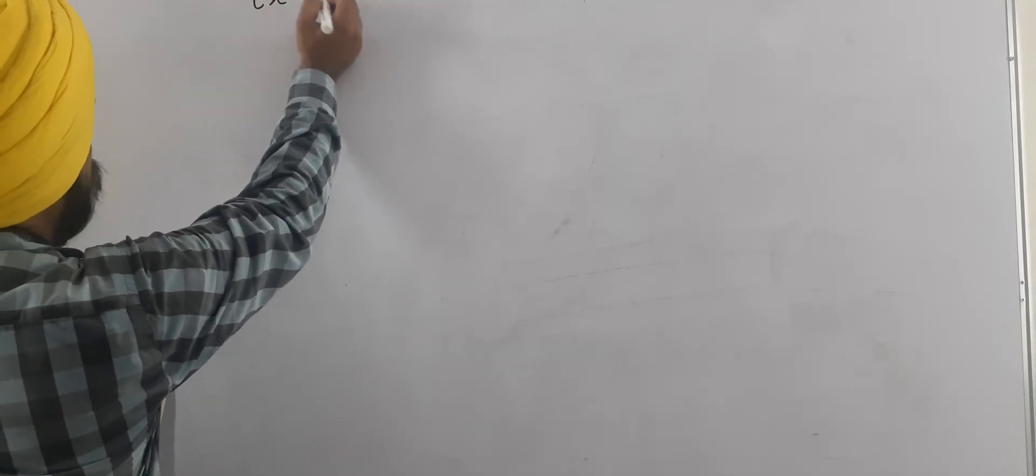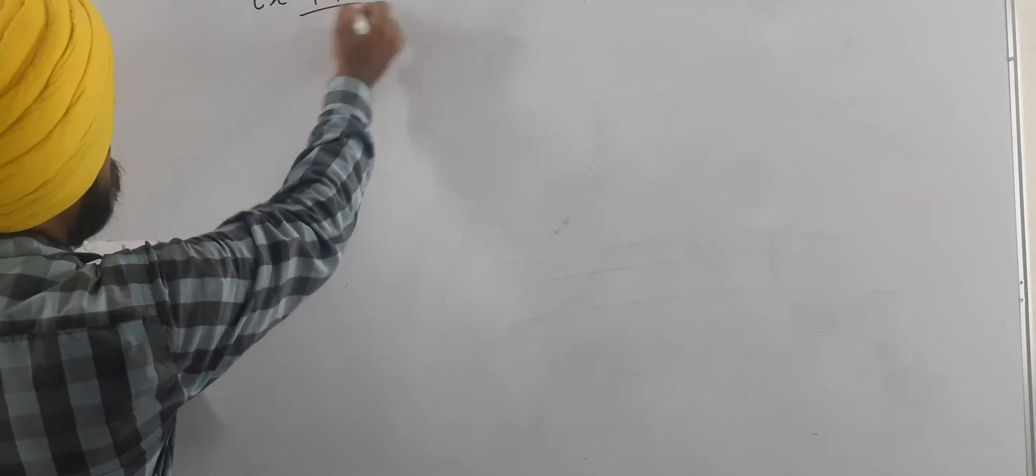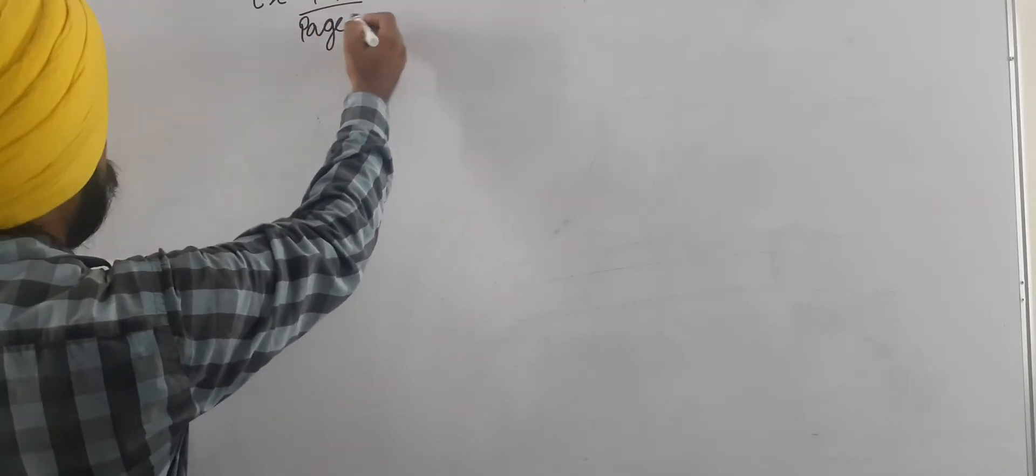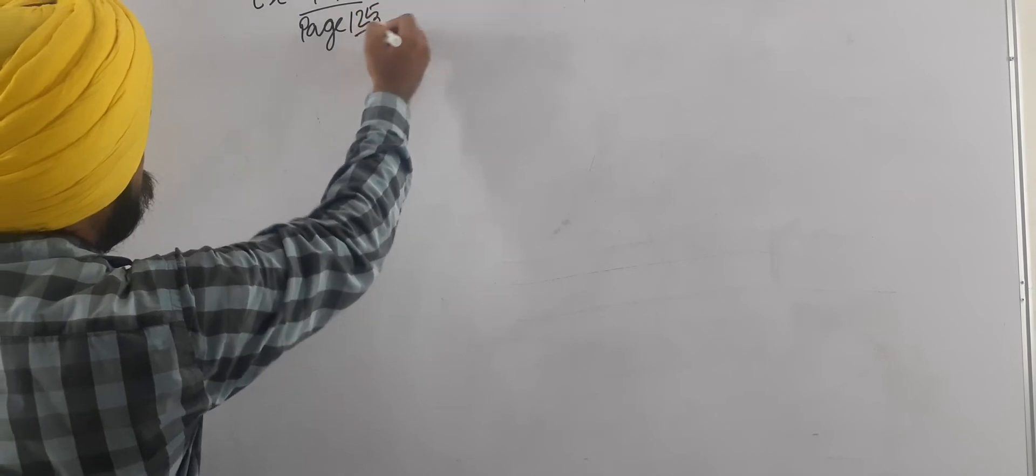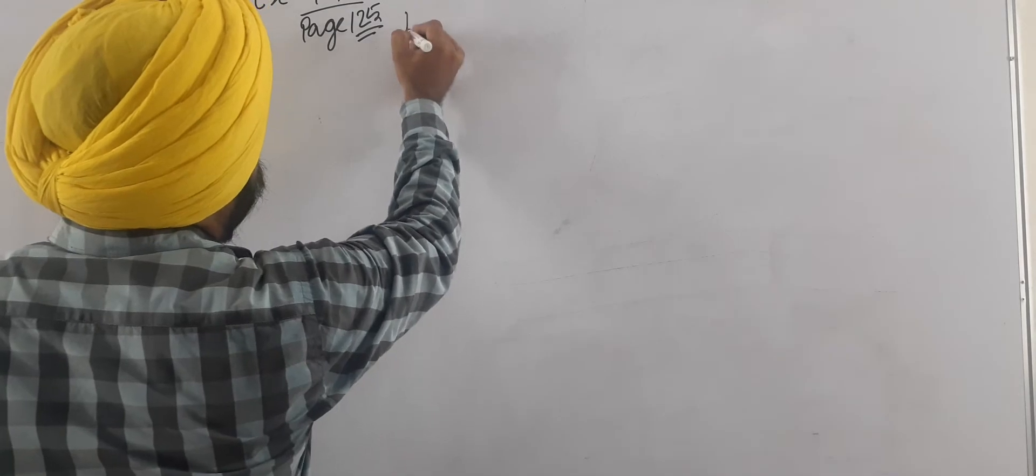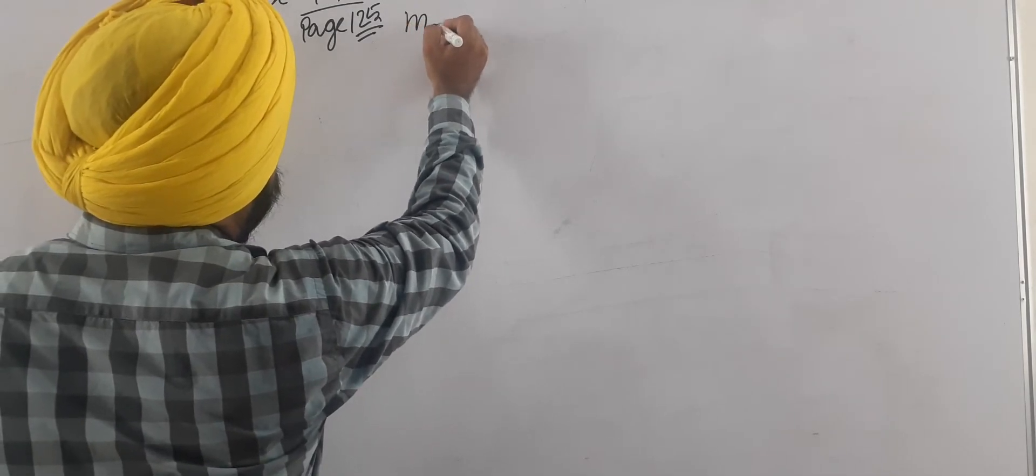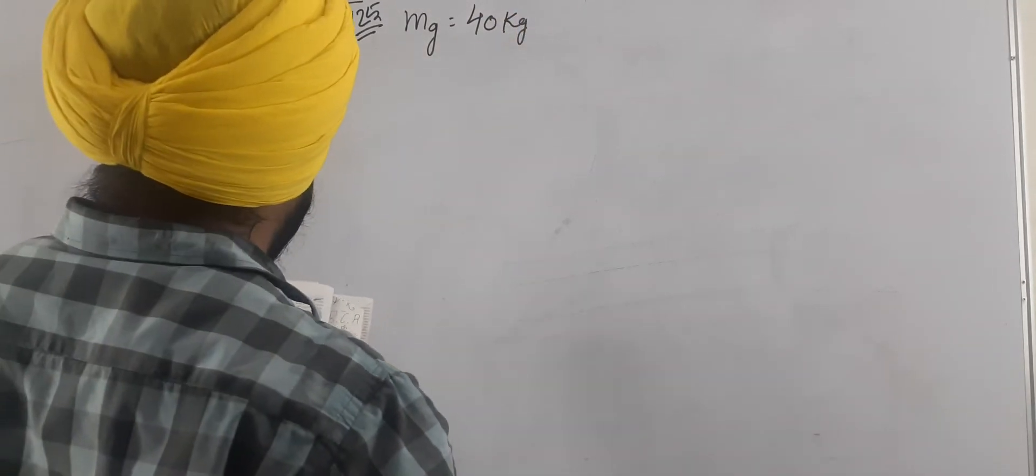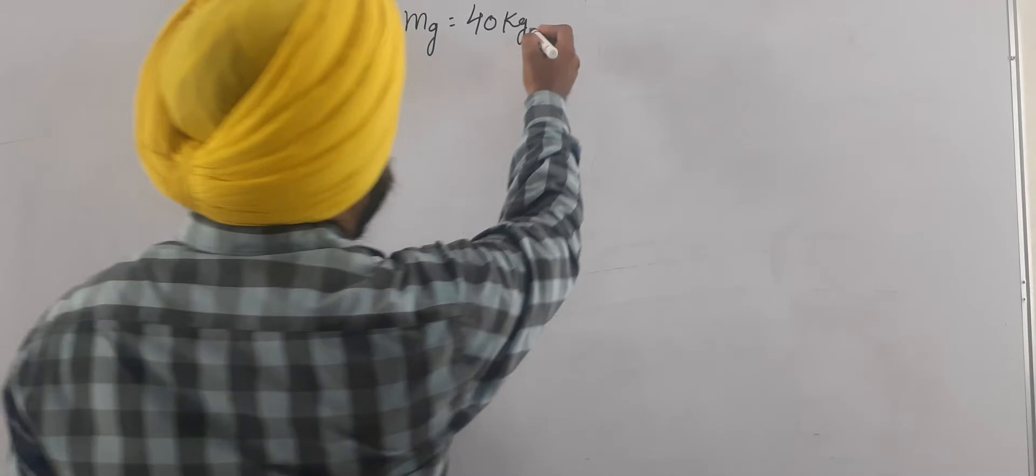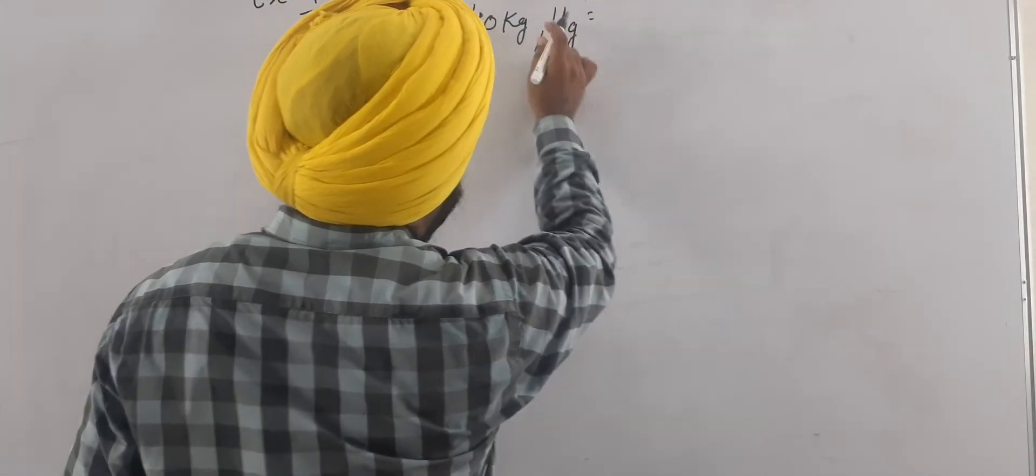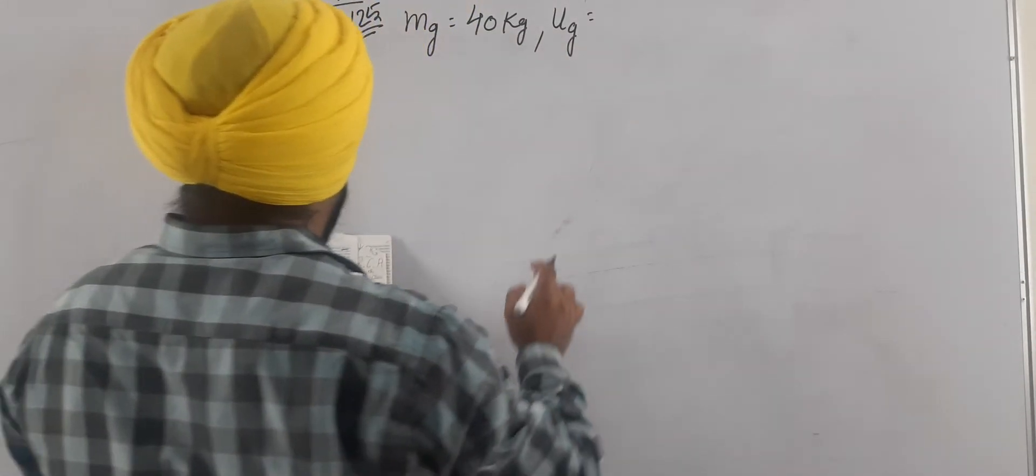For problem 9.7 on page number 125, the given is mass of girl mg is 40 kg. Second, it jumps with the horizontal velocity, meaning its initial velocity, that is ug, initial velocity of girl.